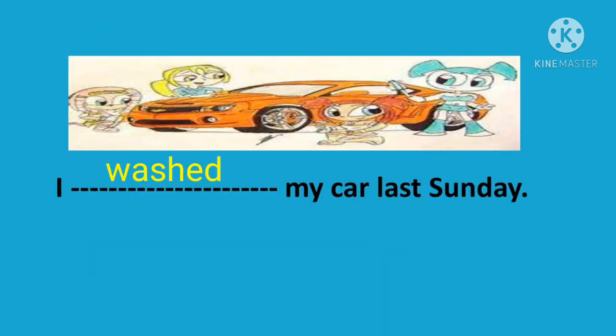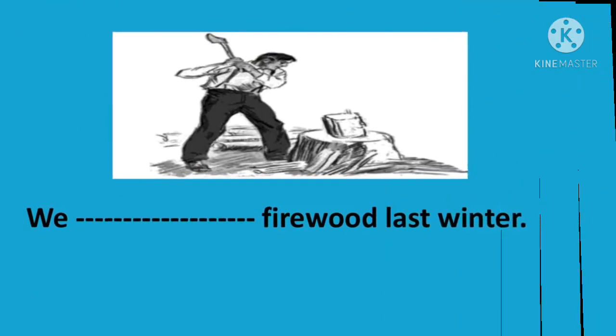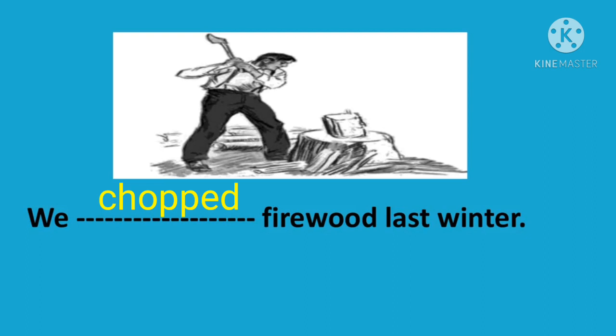Now the next example: 'I washed my car last Sunday.' Next, look at the picture — which verb will come and what will be the spelling? The consonant-vowel-consonant rule applies: the consonant is doubled — c-h-o-double p-e-d — 'chopped.' 'We chopped firewood last winter.' Keep these rules in mind for past verbs, whether they are irregular or regular verbs.